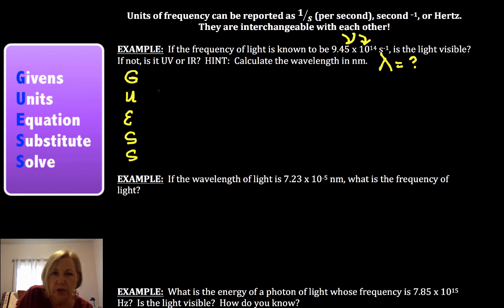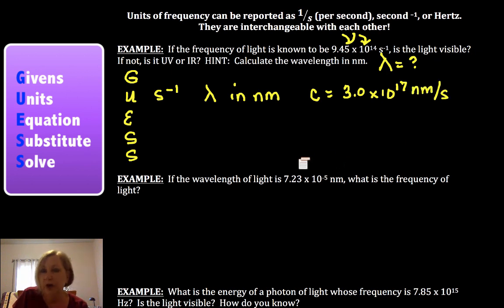It says there's my frequency and what is my wavelength equal to. Those are my givens. I always want us to check our units. In this case, we have seconds to the minus one. Our wavelength we want in nanometers. If you use the speed of light equal to 3.0 times 10 to the 17 nanometers per second, our units are okay. So now we need to get our equation.